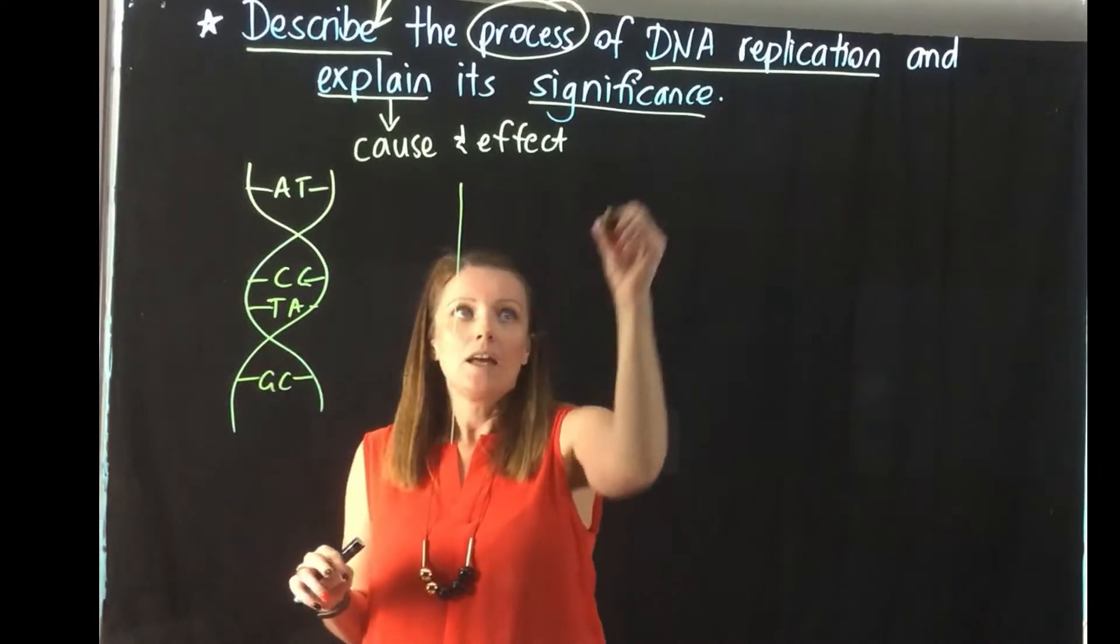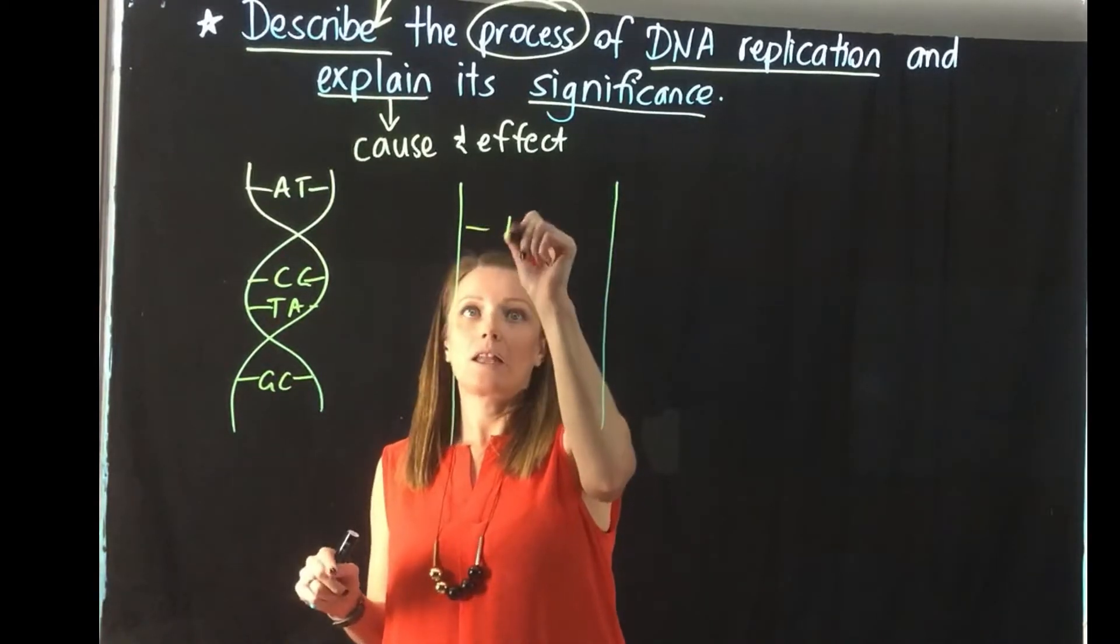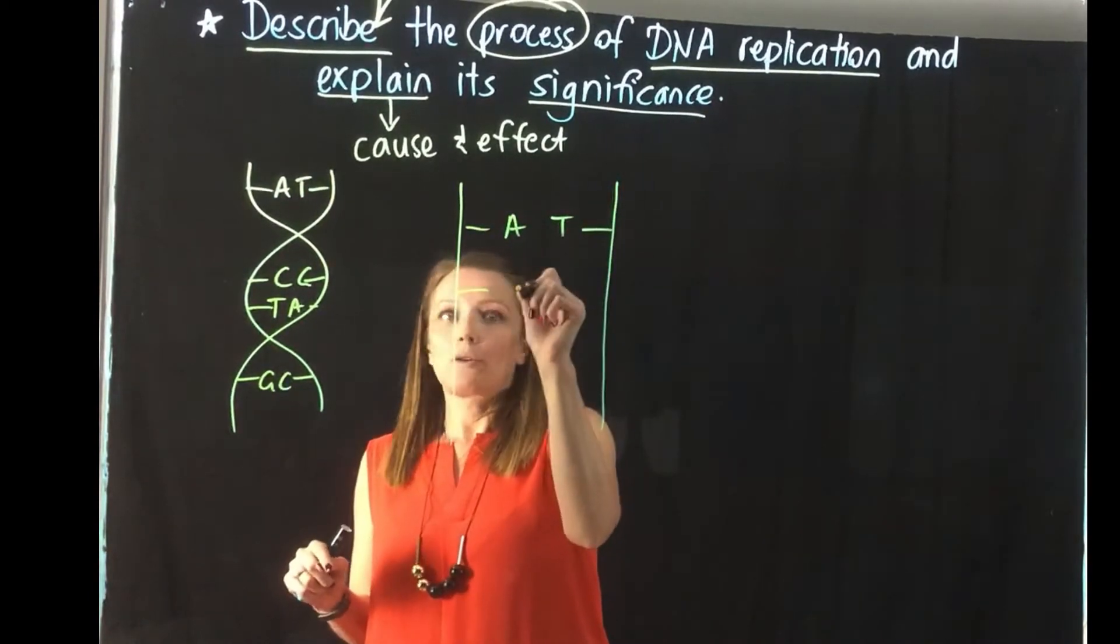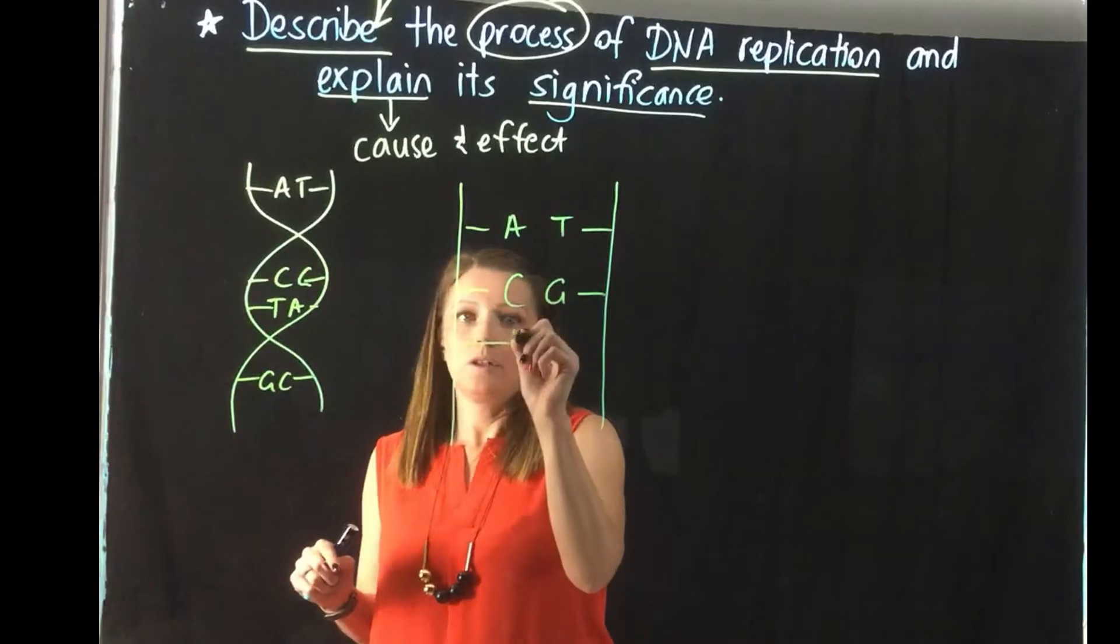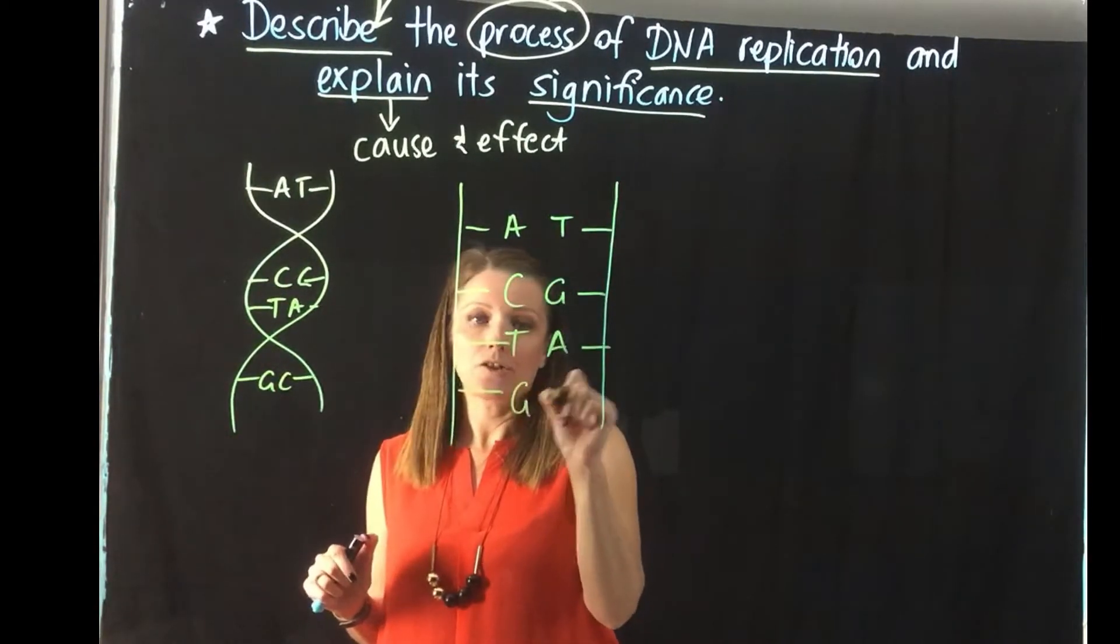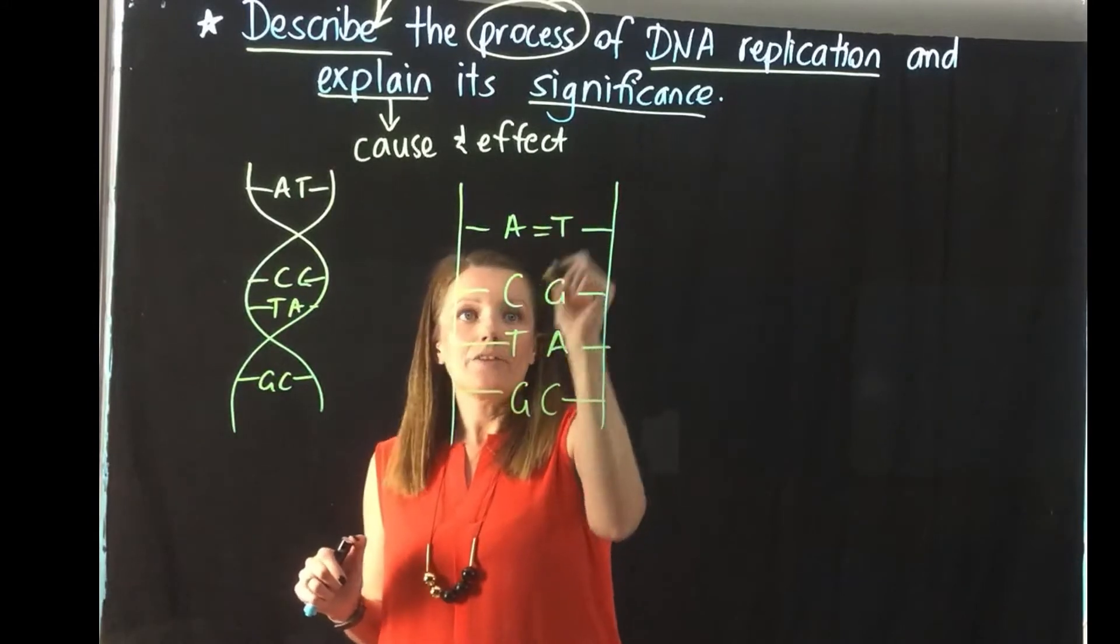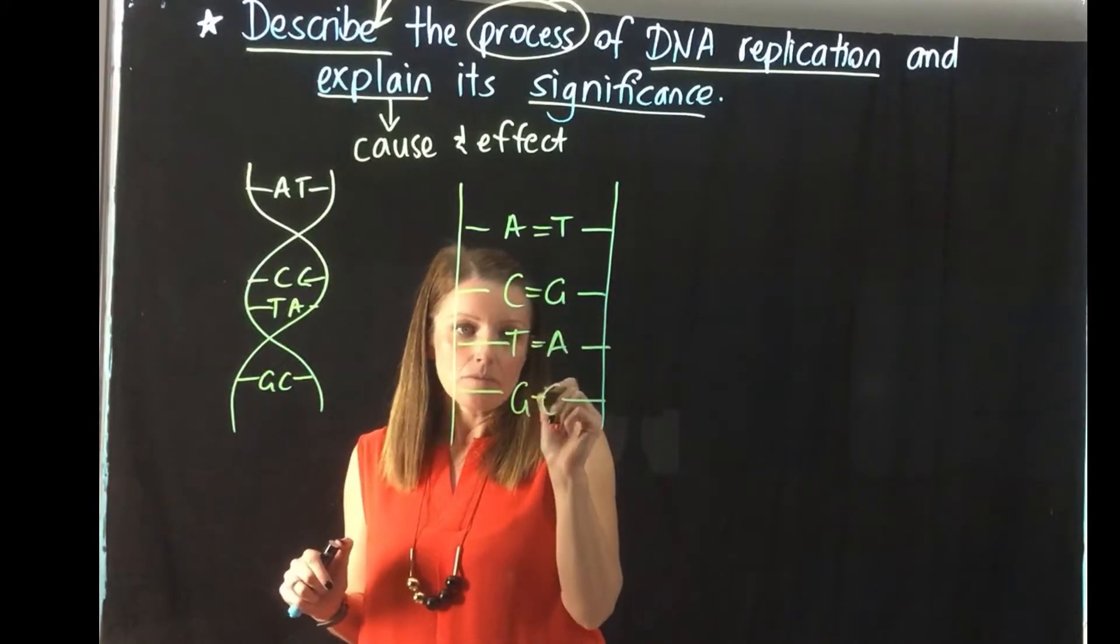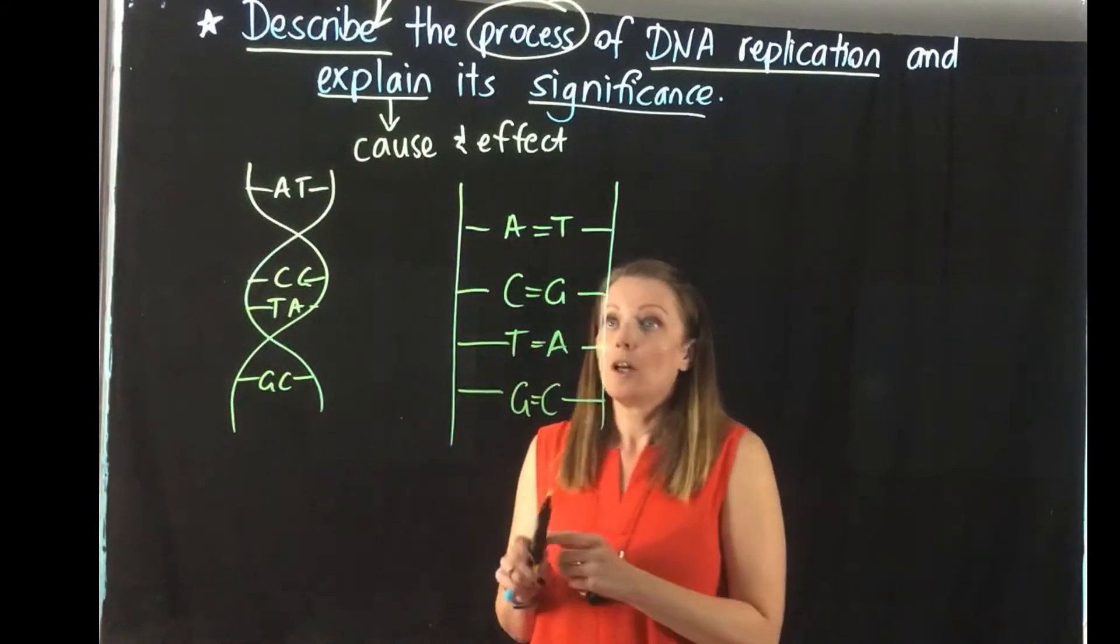Before we can have replication take place, the DNA needs to first unwind and go back to our ladder structure. So if we just redraw our base pairing, remember that A always goes with T and G always goes with C, and these are bonded together with hydrogen bonds.